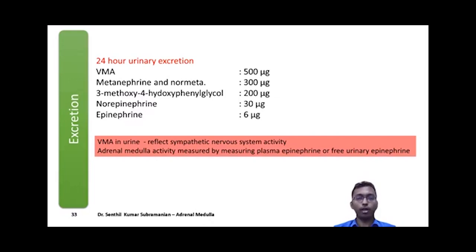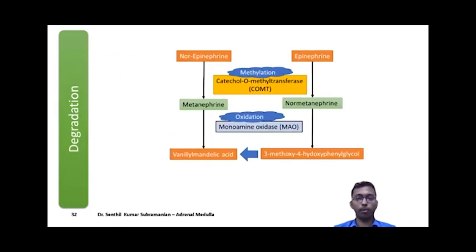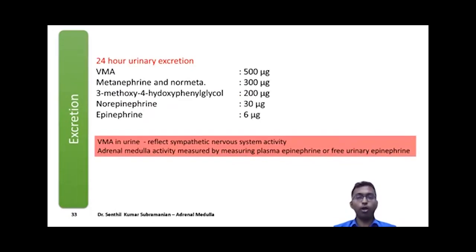The major urinary catecholamine metabolite is vanillylmandelic acid (VMA), while free norepinephrine and epinephrine in urine are very minimal. Measuring VMA in urine reflects sympathetic nervous system activity, not specifically adrenal medullary activity, since norepinephrine contributes more to VMA than epinephrine does. To specifically measure adrenal medullary secretion, one must directly measure plasma epinephrine levels or free urinary epinephrine.